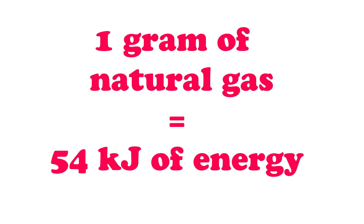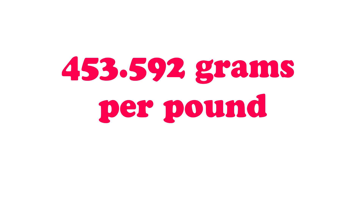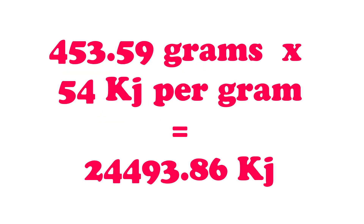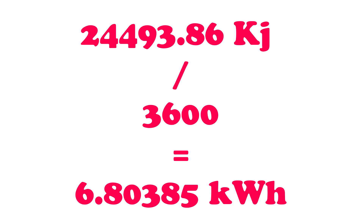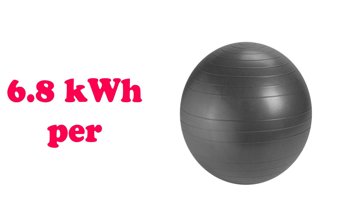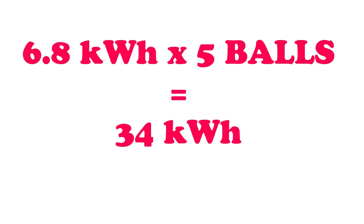One gram of natural gas is equal to 54 kilojoules of energy, and there are 453.592 grams per pound. So we multiply 453.59 times 54 kilojoules per gram, which gives us 24,493.86 kilojoules. We divide that by 3,600 — the formula to convert kilojoules to kilowatt hours — and we get 6.80385 kilowatt hours, so about 6.8 kilowatt hours per yoga ball. We got five of these balls this run, so 6.8 times 5 equals 34 kilowatt hours from the yoga balls alone.